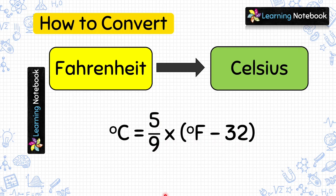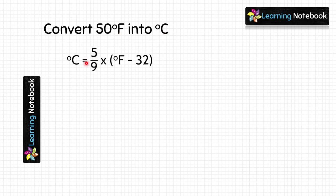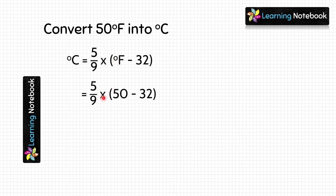Let's do some questions based on this. Here, we are given temperature in Fahrenheit and we have to convert it into Celsius. The formula to convert temperature given in Fahrenheit into Celsius is 5/9 into (Fahrenheit minus 32). Let's put the value of temperature in Fahrenheit in this formula. We get 5/9 multiplied by (50 minus 32). First we will do subtraction, and 50 minus 32 is 18.